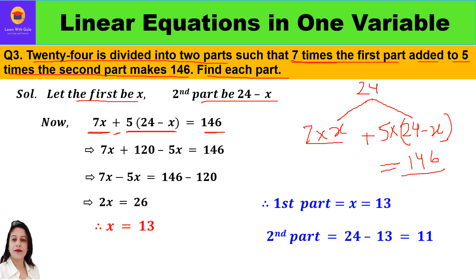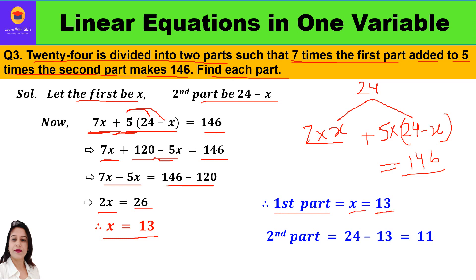Solving: 7x plus 5 times (24 minus x) gives 7x plus 120 minus 5x equals 146. So 7x minus 5x is 2x, and 146 minus 120 is 26. Therefore 2x equals 26, so x equals 26 divided by 2, that is 13. The value of x is 13, so the first part is 13.